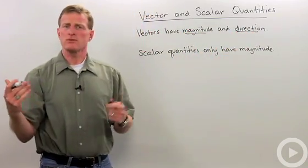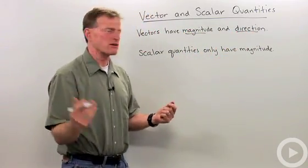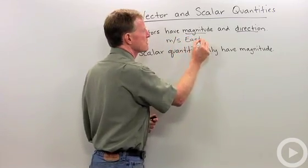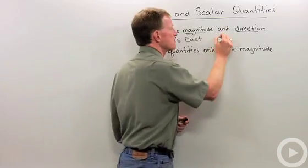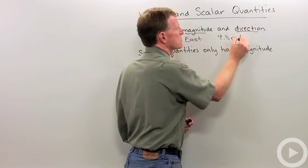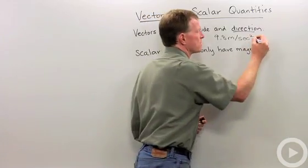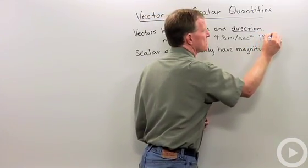Examples that we talk about as vectors are things like velocity, meters per second east, or acceleration, 9.8 meters per second squared in the 180 degree direction.